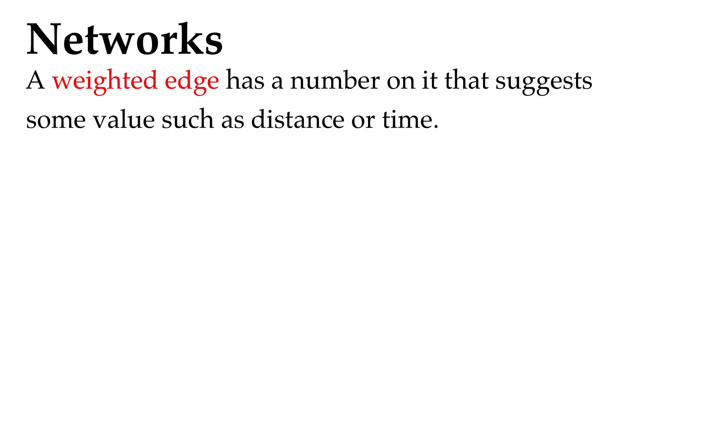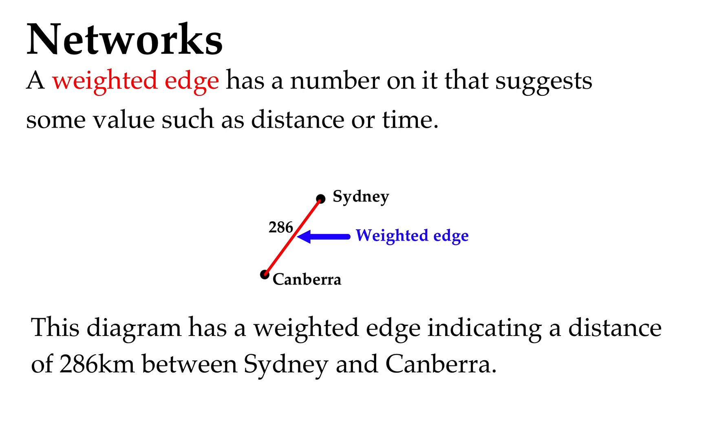A weighted edge has a number on it suggesting some value, such as distance or time. Here I have a weighted edge in red. It's got 286 next to it, doesn't have any units, and they often don't. But trust me, from Sydney to Canberra is 286 kilometers according to Google Maps. I looked it up myself. So weighted edges have numbers indicating things.